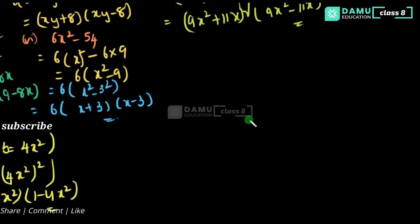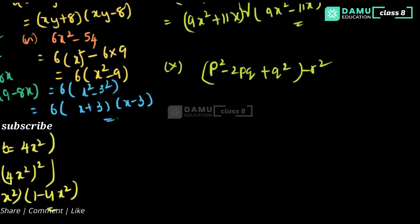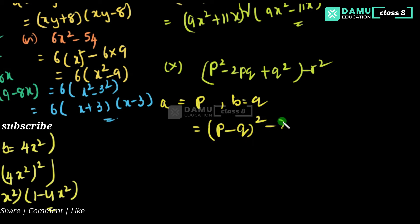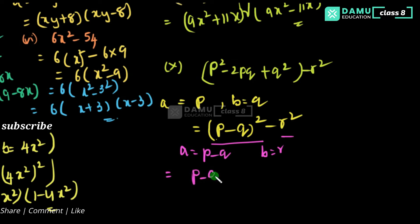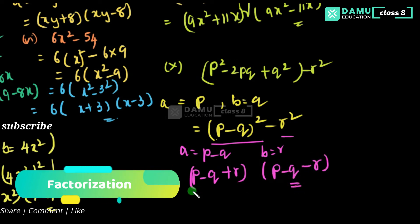The tenth one is p squared minus 2pq plus q squared minus r squared. The first three terms match the a minus b whole square formula, giving p minus q whole squared. So we have p minus q whole squared minus r squared. Now applying a squared minus b squared again with a equals p minus q and b equals r, we get p minus q plus r into p minus q minus r.